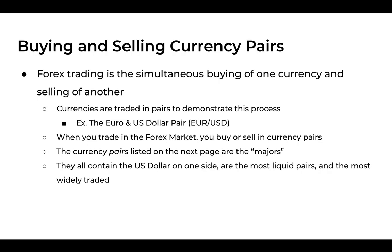Forex trading is the simultaneous buying of one currency and selling of another. So even if you're just clicking the buy button, you're actually buying one currency and selling another at the same time. Currencies are traded in pairs — for example, the euro and the US dollar pair, which is EUR/USD. The major pairs all contain the US dollar on one side and are the most liquid and most widely traded pairs.